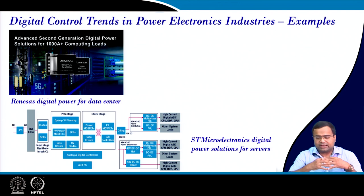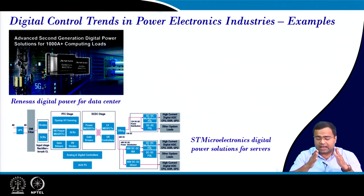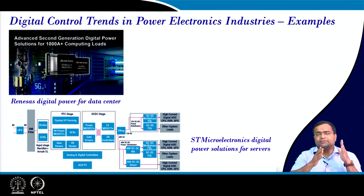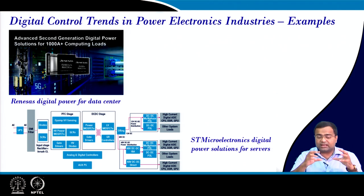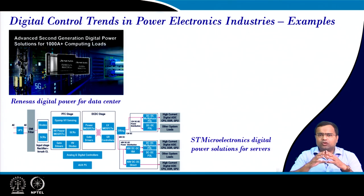Another example I am showing is the ST Microelectronics solution for the server — a complete server starting from the AC input, then AC to DC, then DC to DC. Nowadays there is a growing trend for 48 volt direct conversion, which is the Google server standard. There can be a single stage 48 volt to POL or multiphase, or a two-stage architecture. There has been a lot of research in this area, and most products are coming in digital power solutions.